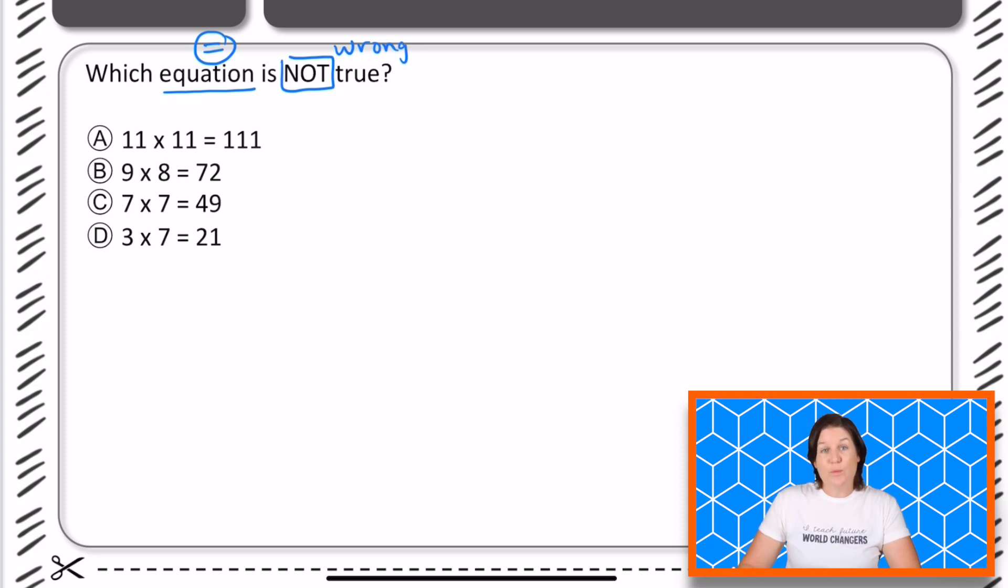So we have to figure out which one is wrong here. That means that we should have three that are true, that are correct, and only one that is wrong. So let's go ahead and work each of them out.